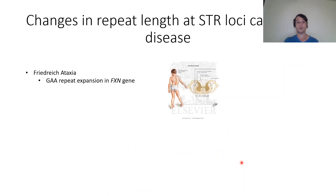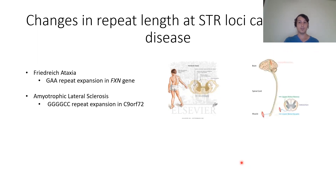Regarding disease, the first example is Friedreich ataxia, caused by a trinucleotide GAA repeat expansion in the FXN gene. It has a relatively early age of onset around 20 and leads to difficulty walking, obvious gait abnormalities, and difficulty breathing. The second example is amyotrophic lateral sclerosis (ALS), caused by a hexanucleotide repeat expansion in C9ORF72, accounting for about 40% of all familial ALS cases.